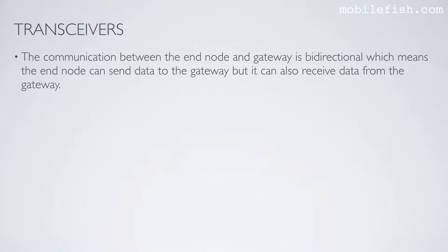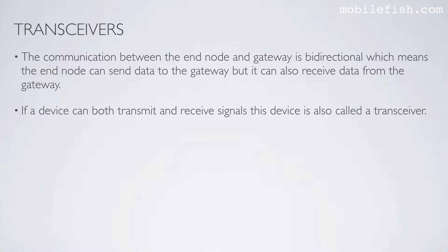The communication between the end node and gateway is bi-directional, which means the end node can send data to the gateway but it can also receive data from the gateway. If a device can both transmit and receive signals, it is called a transceiver. LoRa end nodes and gateways are transceivers.